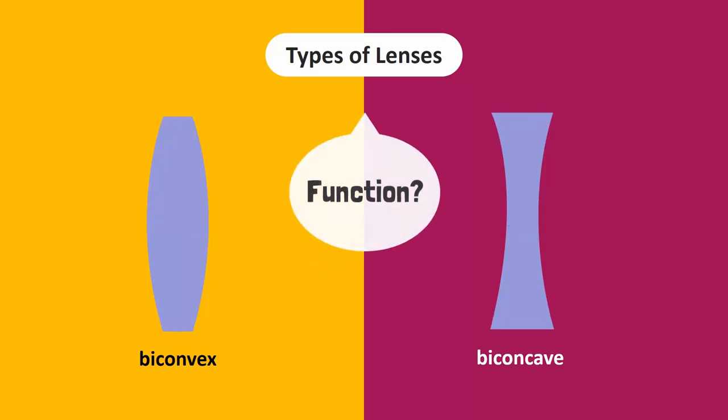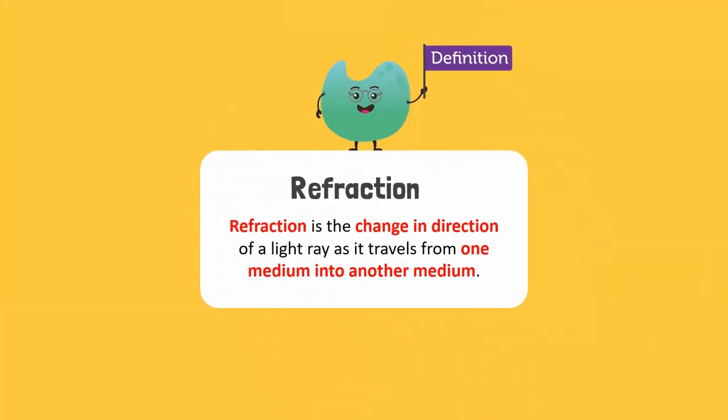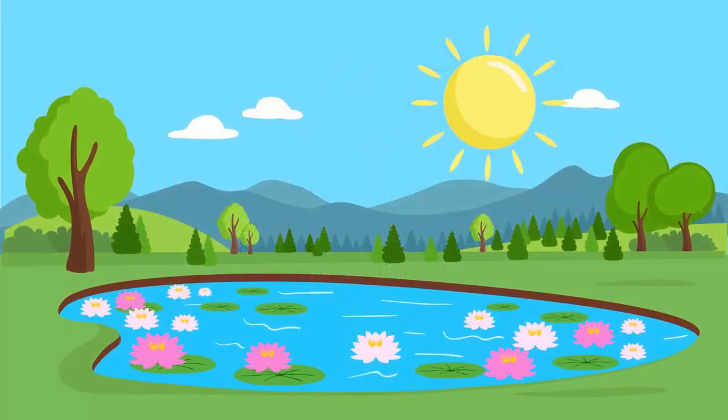But how does a lens function? The main purpose of the lens is to refract light in some pattern. Remember that refraction is the change in direction of a light ray as it travels from one medium into another medium. For instance, when light travels from air into water.